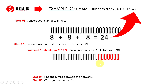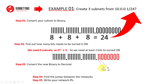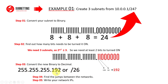Step three: convert the new binary to decimal. We turn on two bits in the last octet, so 128 plus 64 equals 192. The new subnet mask in decimal format is 255.255.255.192, or /26 in CIDR format.